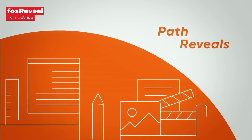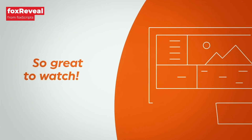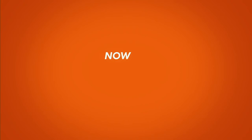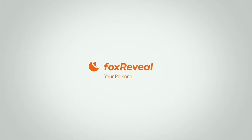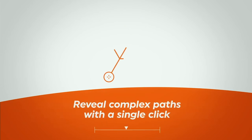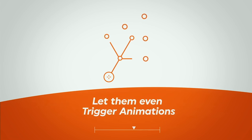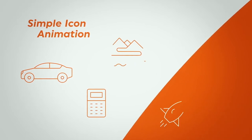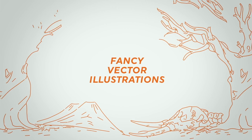The Trim Paths Animator is one of my favorite tools inside of Adobe After Effects, and that's why I love Fox Reveal. This takes trimming paths to the next level — it allows AE users to create complex path reveals without adding and moving hundreds of keyframes. You can reveal complex path structures from any point with one simple click, and control the reveal with two simple keyframes and its curve.